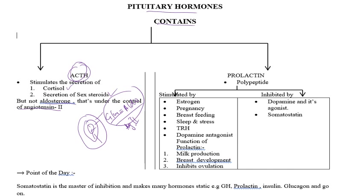Prolactin is a polypeptide. It is stimulated by all female-related things such as estrogen, pregnancy, and breastfeeding. Additionally, stress, TRH — which we have already studied — and dopamine antagonists, because dopamine by itself is inhibitory to prolactin. So if dopamine antagonists are given, prolactin will be stimulated.